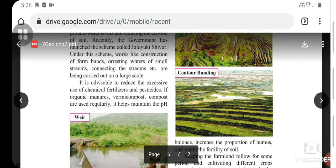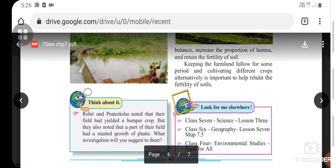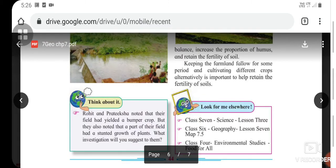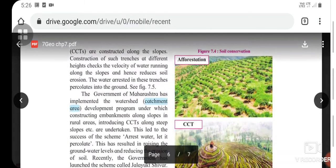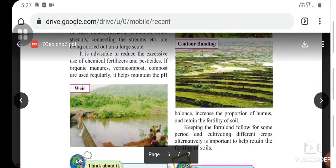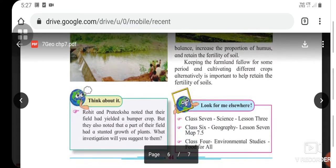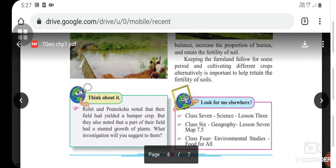Under this scheme, works like construction of farm bunds, arresting waters of small streams, connecting streams are being carried out on a large scale. It is advisable to reduce the excessive use of chemical fertilizers and pesticides. If organic manures, vermicompost, and compost are used regularly, it helps maintain the pH. Think about this: Rohit and Pratiksha noted that their field yielded a bumper crop, but they also noted that part of the field had stunted growth of plants. What investigation will you suggest to them? Figure 7.4 shows soil conservation methods: first is afforestation, second is CCT, and third is contour bunding. It helps in maintaining pH balance, increases the proportion of humus, and retains the fertility of soil.